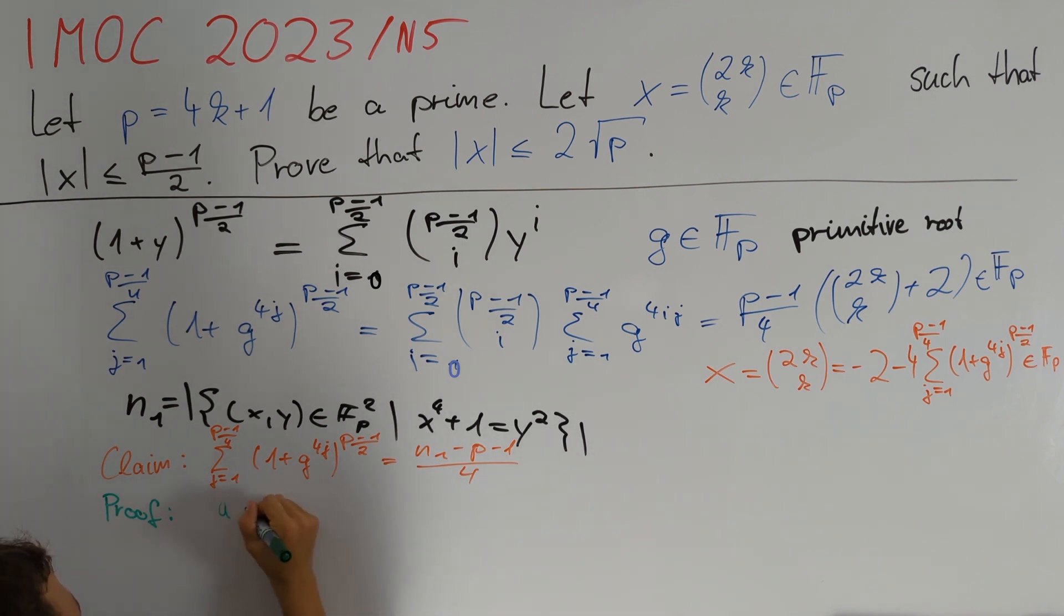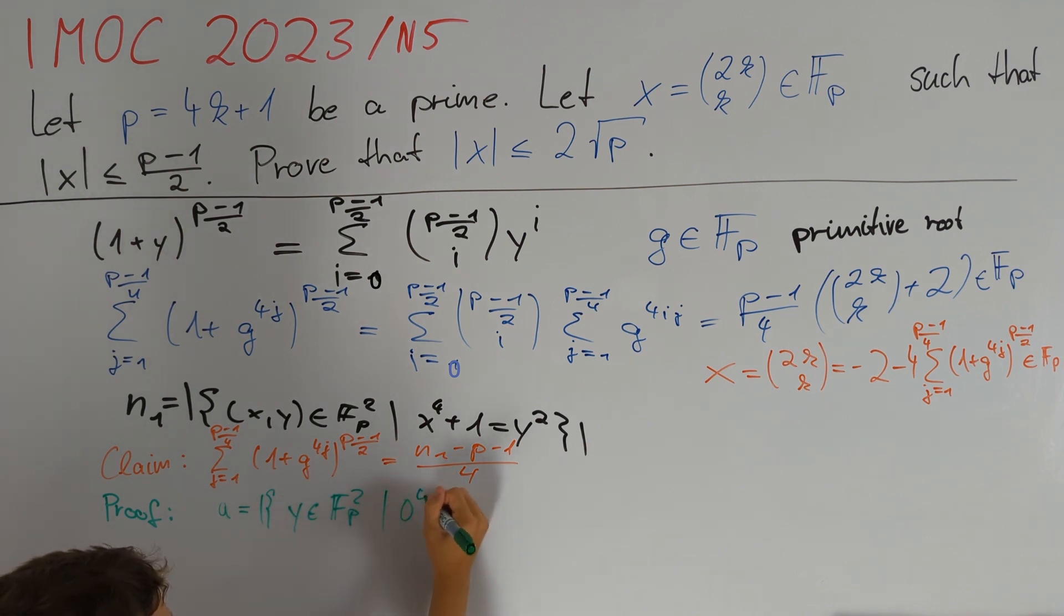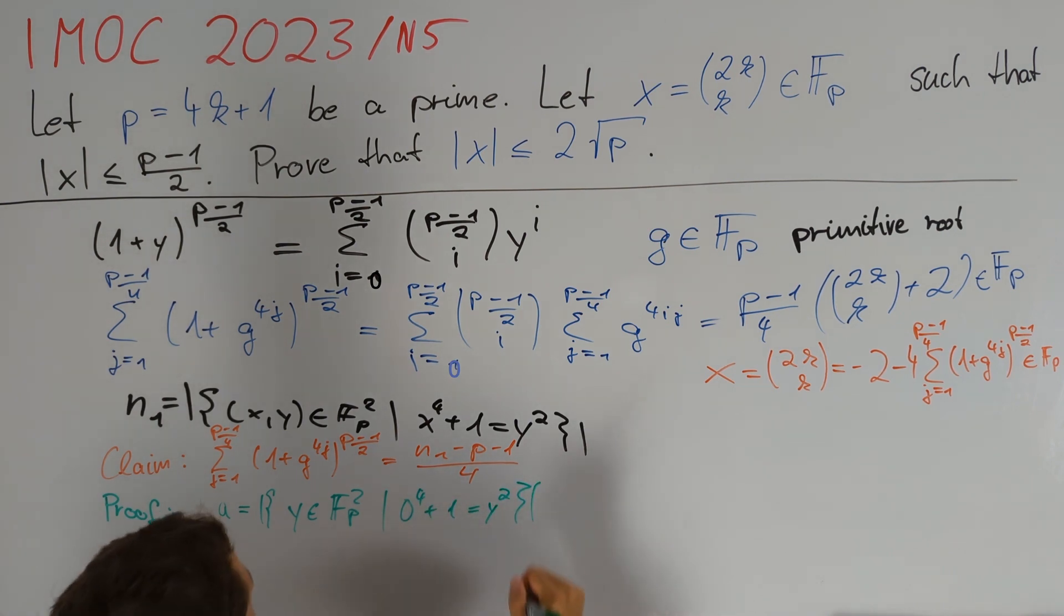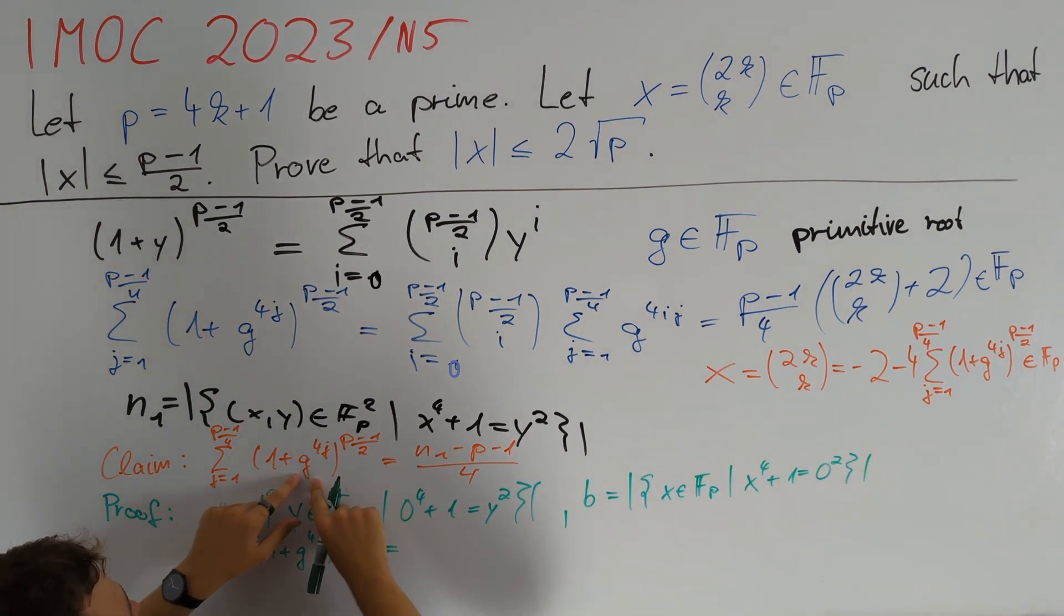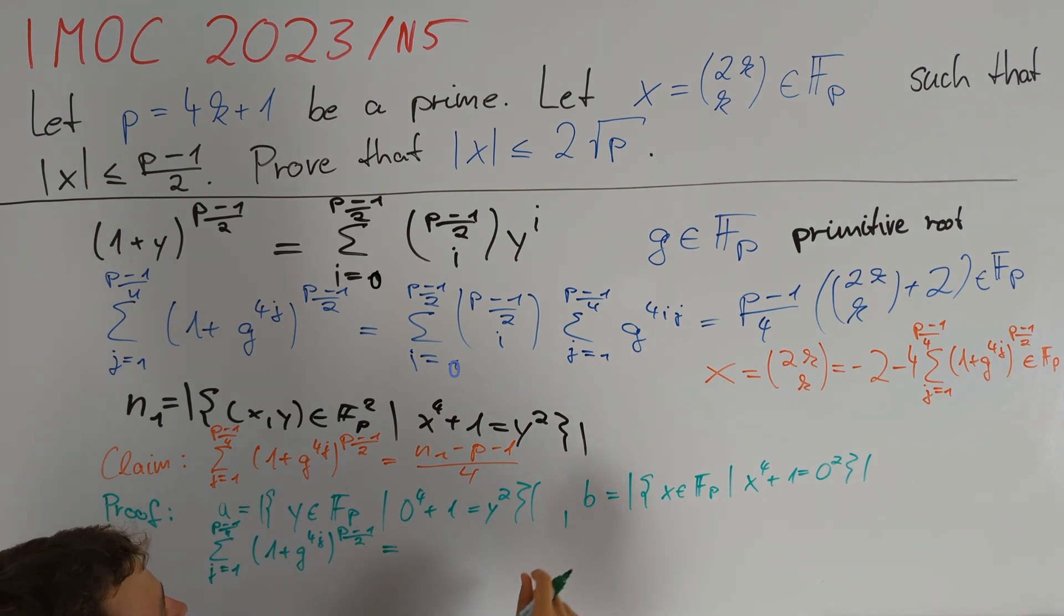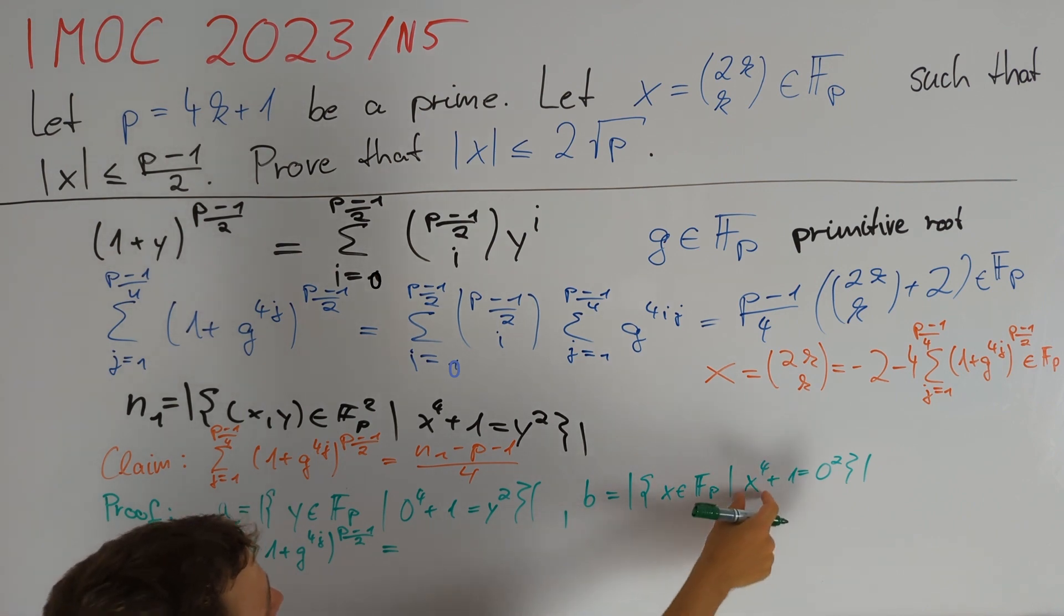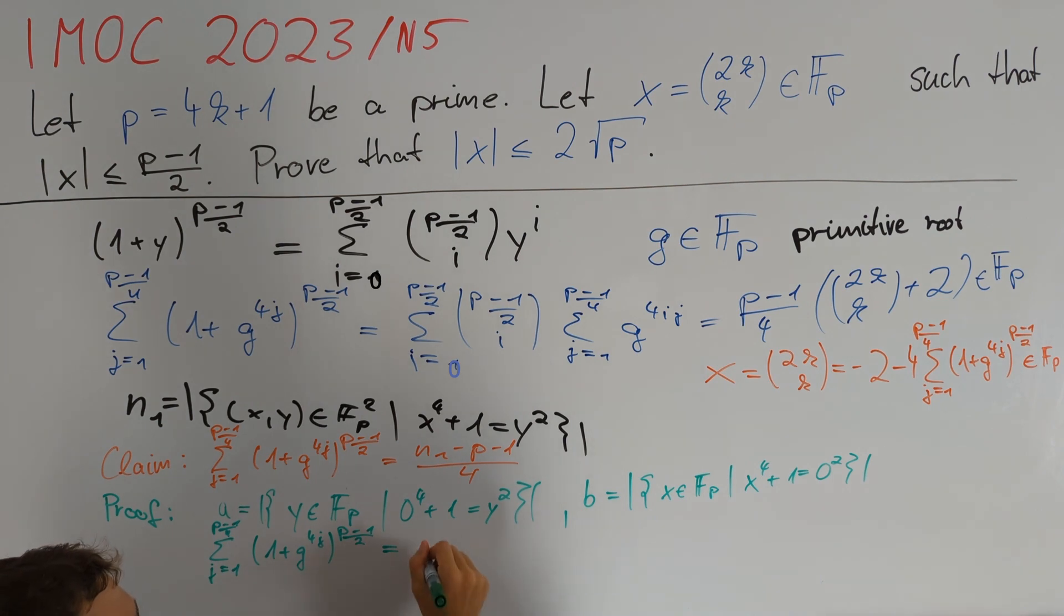To deal with this we define a to be the number of values for y such that 0^4 + 1 equals y^2, and b analogously for x. We get 0 in our sum if and only if 1 + g^(4j) equals 0. These are exactly the summands counted by b but we count such summands 4 times because we have 4 possible values for x and therefore we start with 0 times b/4.